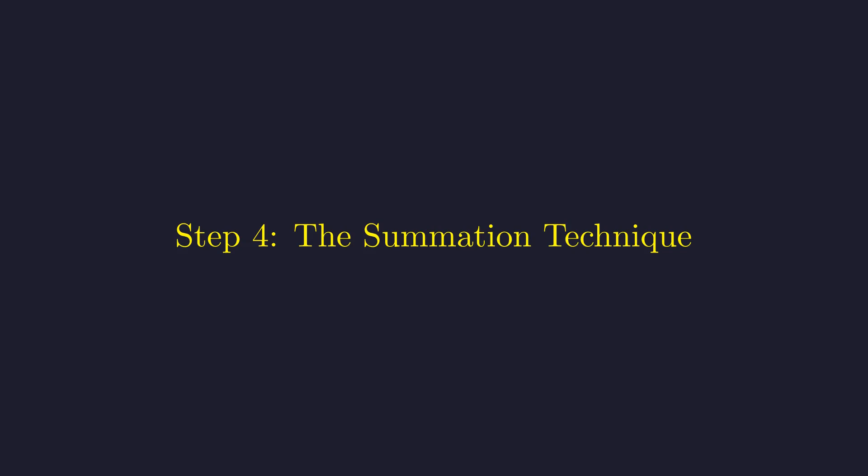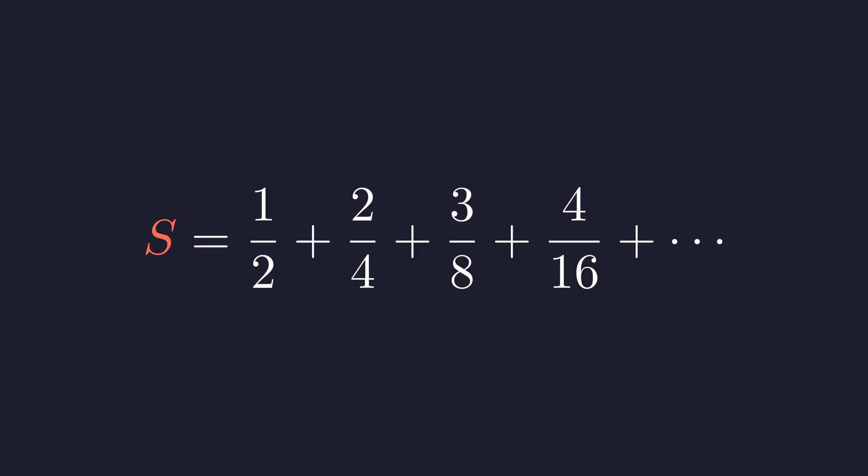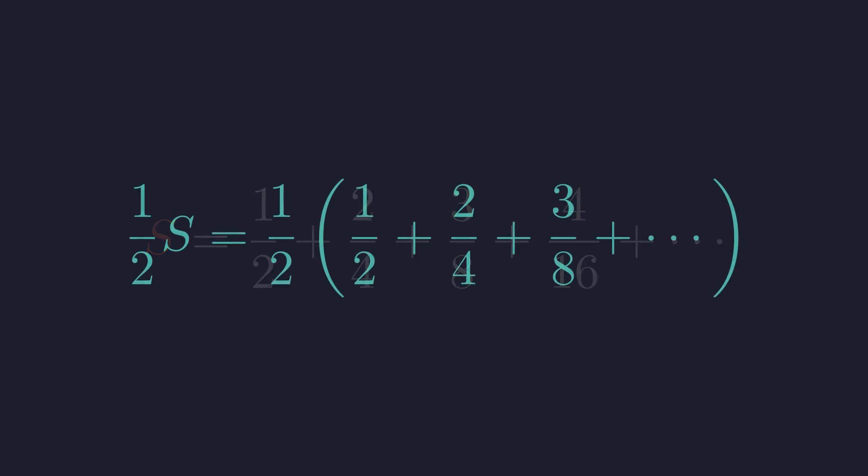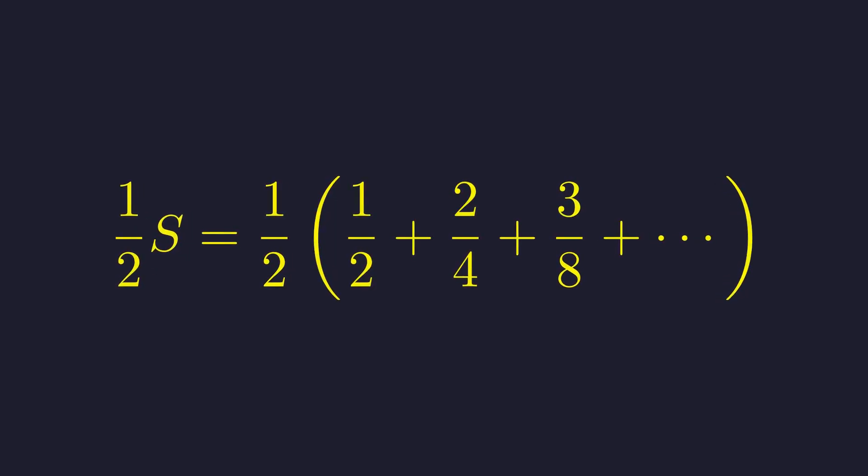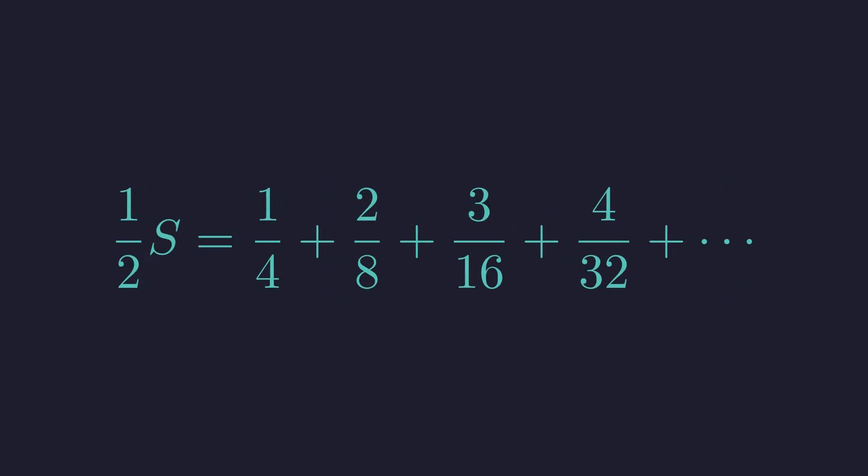There's a really clever technique for finding this sum. Here's our series s. The trick is to multiply the whole thing by one-half. So one-half times s is this. Distributing gives us this new series.